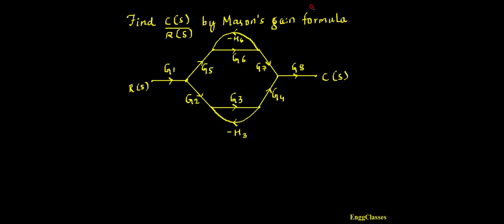Hello everyone, welcome to NG Classes YouTube channel for a video lecture series in control systems. In this video lecture, we shall consider a numerical: find C(S) divided by R(S) by Mason's Gain Formula. This is how the given signal flow graph looks like, where R(S) is the input, C(S) is the output, and I need to find the transfer function C(S) divided by R(S) using Mason's Gain Formula.